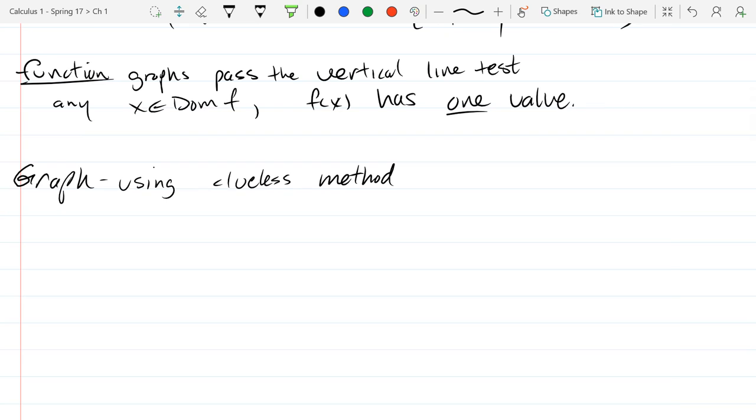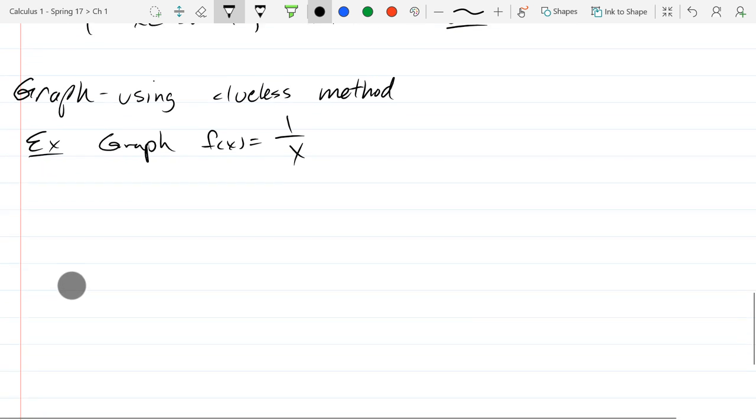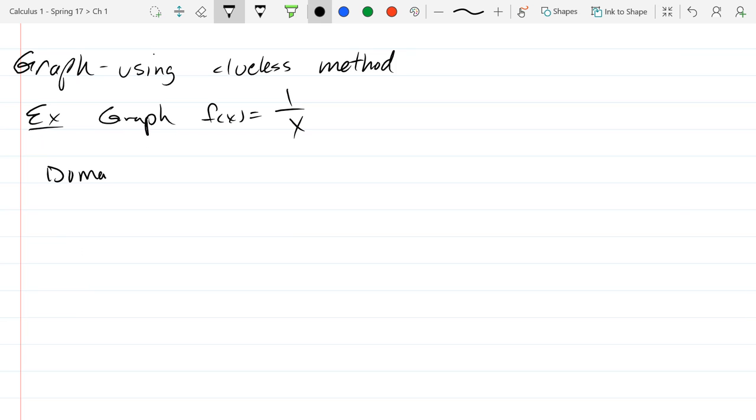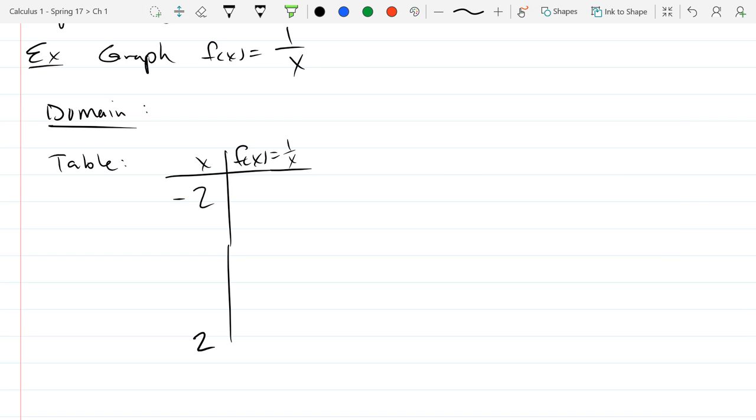So we're going to graph using the clueless method. What is the clueless method? It is the one where you make a table of values and plot points. It's a little less clueless because hopefully you've seen a lot of these functions before in calculus, sometime in pre-calculus one class. So we'll do the one over x function. Write down domain. And from your domain, you can build up your table. I think negative two to two is probably far enough. So figure out what your domain is, fill in your table, and then draw your graph.